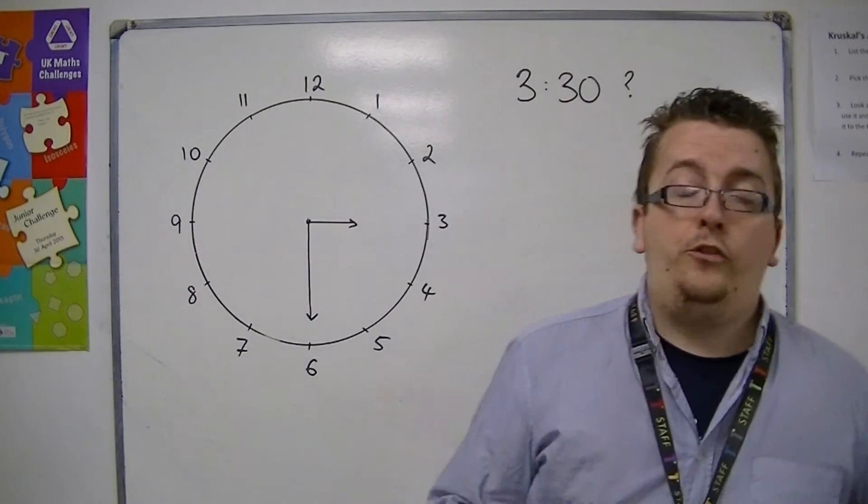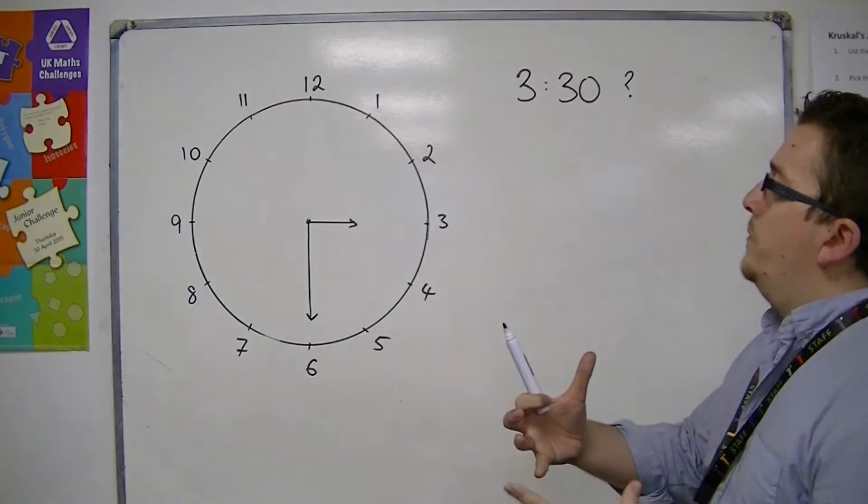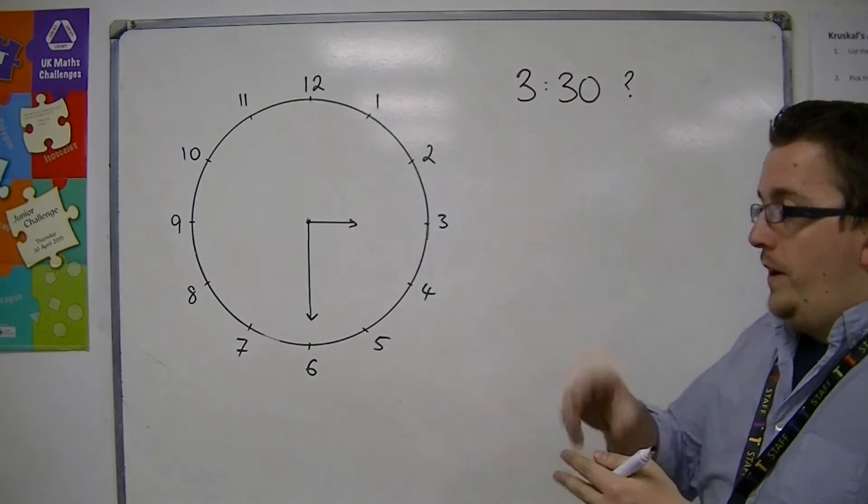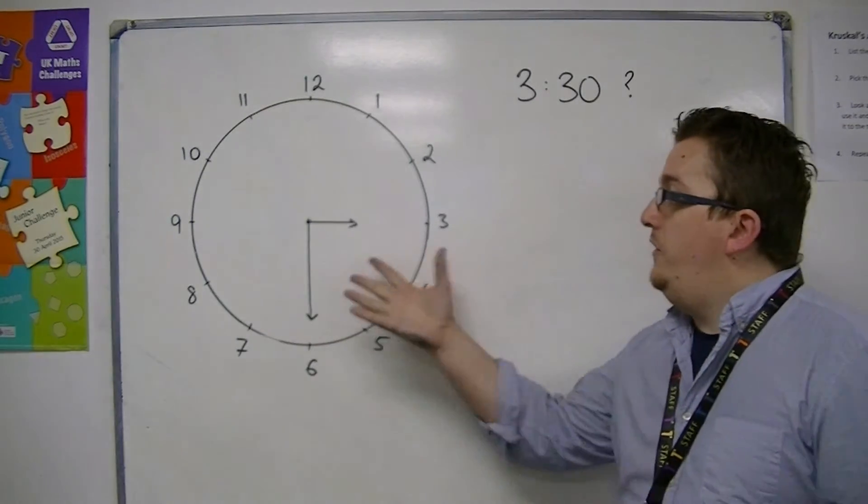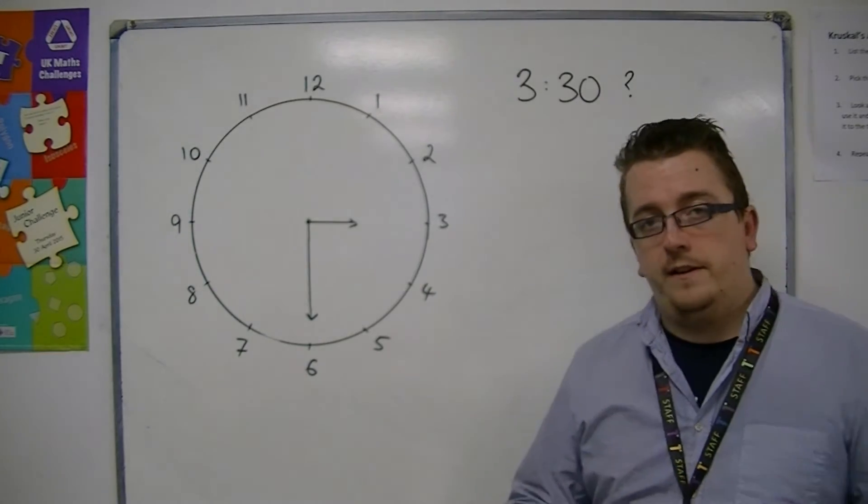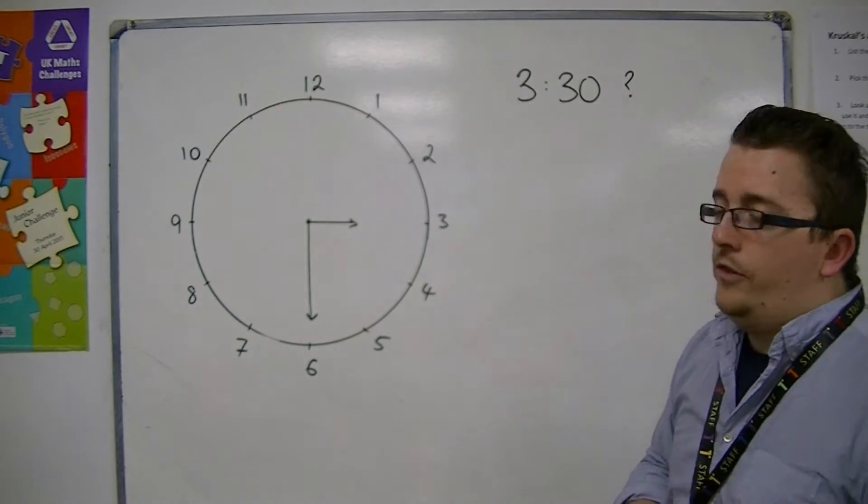And this would be their 3.30. This, however, is wrong. If you look at a clock face and you twist it round to 3.30, so you reset the time to 3.30, this is not what the clock face would look like. The hour's hand would not be directly pointing at 3.